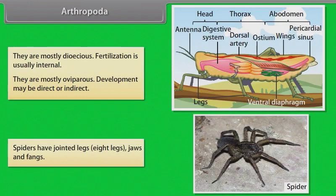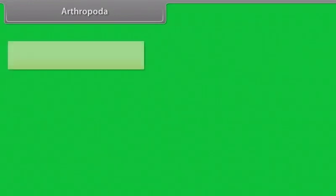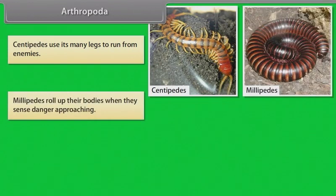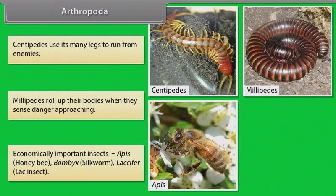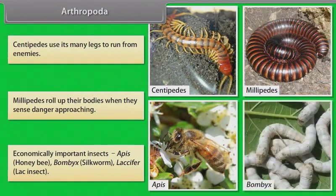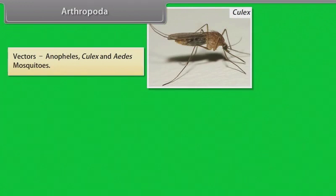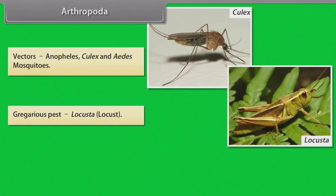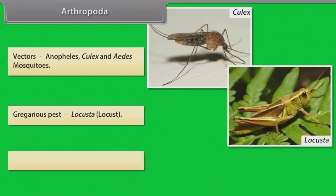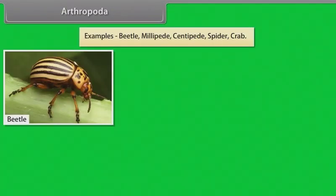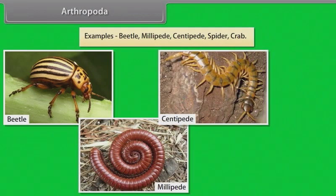Spiders have jointed legs — eight legs — along with jaws and fangs. Centipedes use their many legs to run from enemies. Millipedes roll up their bodies when they sense danger approaching. Economically important insects include: Apis, that is honeybee; Bombyx, that is silkworm; and Laccifer, that is lac insect. Vectors include Anopheles, Culex and Aedes mosquitoes. Gregarious pest: Locusta, that is locust. Living fossil: Limulus, that is King Crab. Other examples: Beetle, Millipede, Centipede, Spider, Crab.